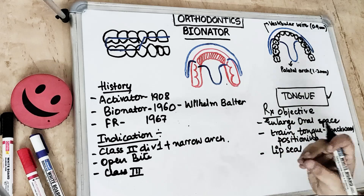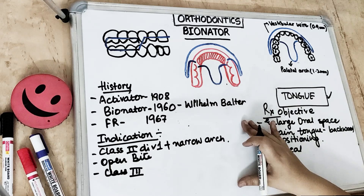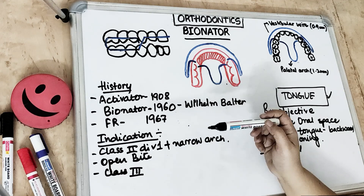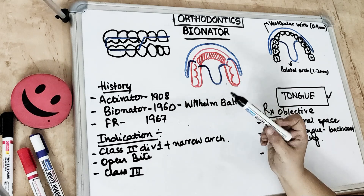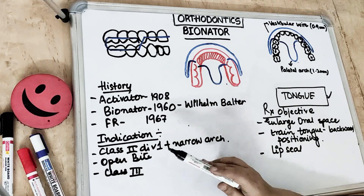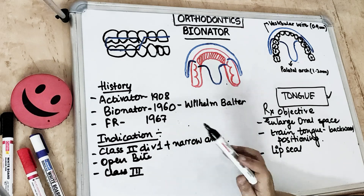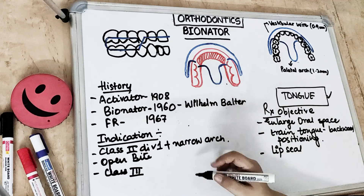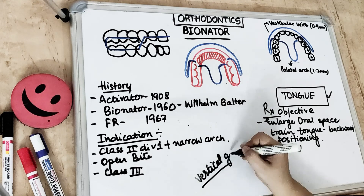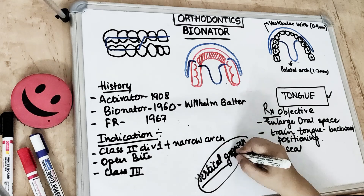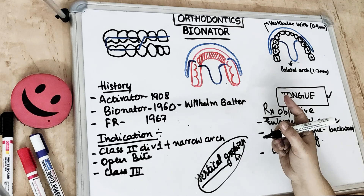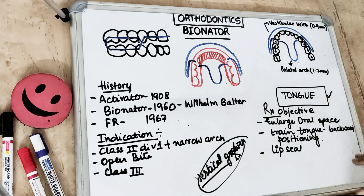It is more vulnerable to distortion due to less support in the alveolar and incisal regions. It is indicated in class 2 division 1 cases with narrow dental arches, posterior mandibular positioning, and labial tipping of incisors. It is also used in open bite cases and in class 3 cases where the reverse Bionator is used. However, it is not used in patients with a vertical growth pattern or where there is labial tipping of the mandibular incisors, since it covers the lingual surfaces of the lower anterior teeth.